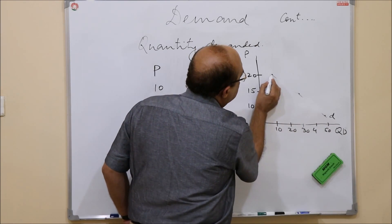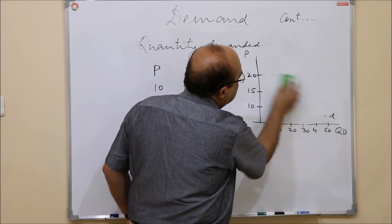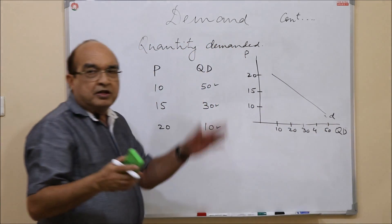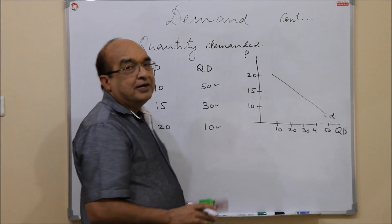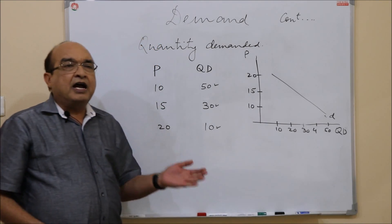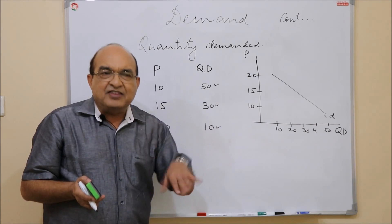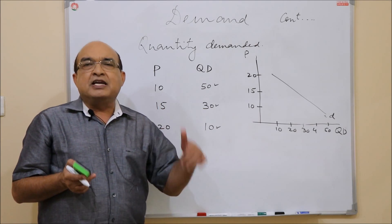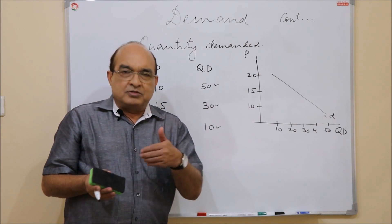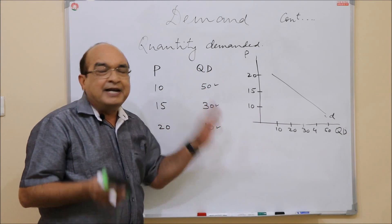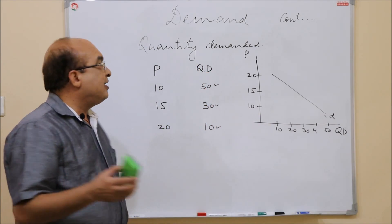Although, it's not necessary that the demand curve is a straight line - it could be a curve or it could be a straight line. So this is demand. And as we will see later, this demand plays a very significant role in determining the equilibrium price. So this is the distinction between quantity demanded and demand.